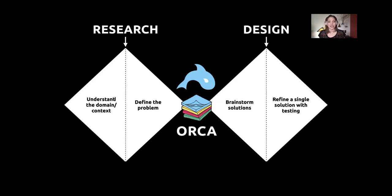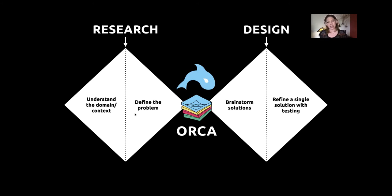Obligatory double diamond slide. ORCA is the process we use to build great OAUX — it stands for Objects, Relationships, CTAs, and Attributes. I like to put it smack dab in the middle of the double diamond. First you gather all your research to go into the ORCA process, which is definitely a garbage-in-garbage-out process. If your research isn't good, the ORCA process will make that very clear to the entire team that you have to go back to research. It's kind of like a gauntlet you have to get through to actually start working on design.